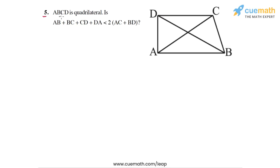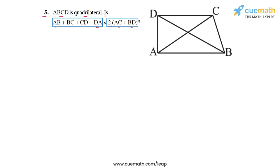Question 5 of this exercise says: ABCD is any quadrilateral. Is AB plus BC plus CD plus DA less than twice of AC plus BD? So this is what we have to answer. On the left side we have AB plus BC plus CD plus DA, which is the sum of the four sides of the quadrilateral, and on the right side we have twice of AC plus BD, which basically means twice of the sum of the two diagonals.